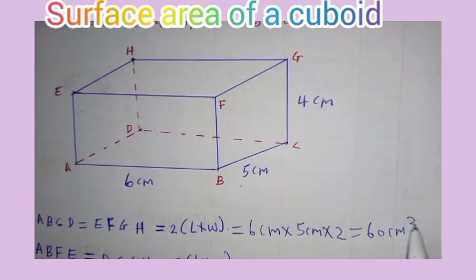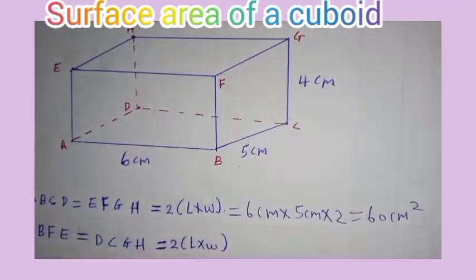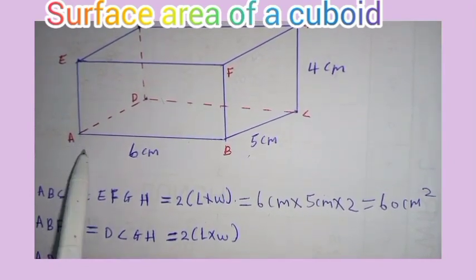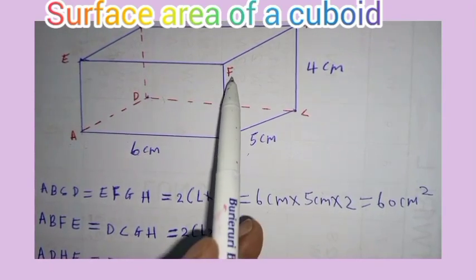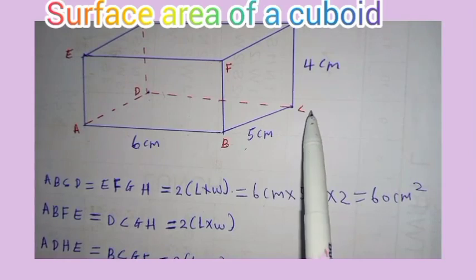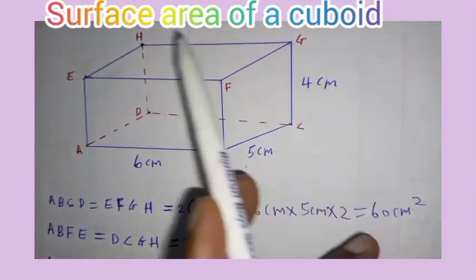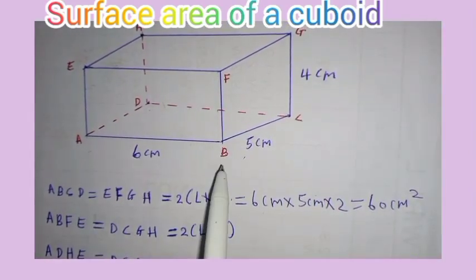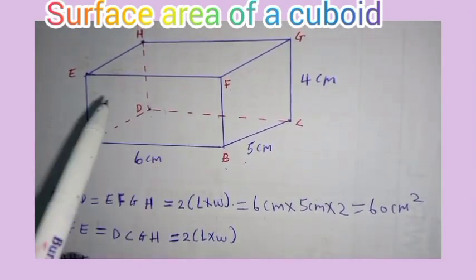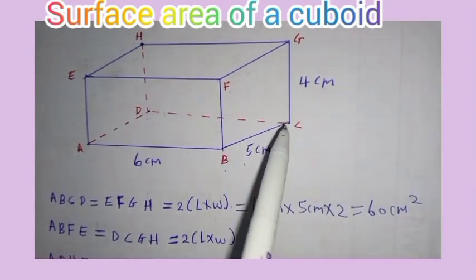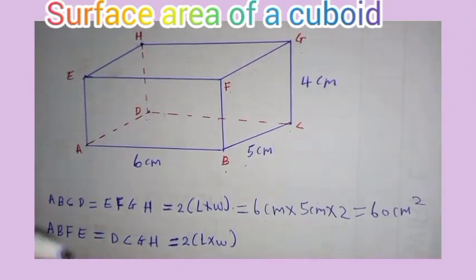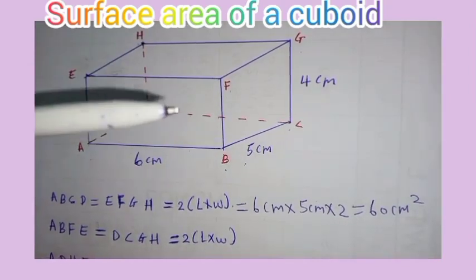So the unit of area is square unit. Now we consider this other face. Face ABFE is the same as face DCGH. I repeat: face ABFE is the same as face DCGH. And this front face is the same as the back face.